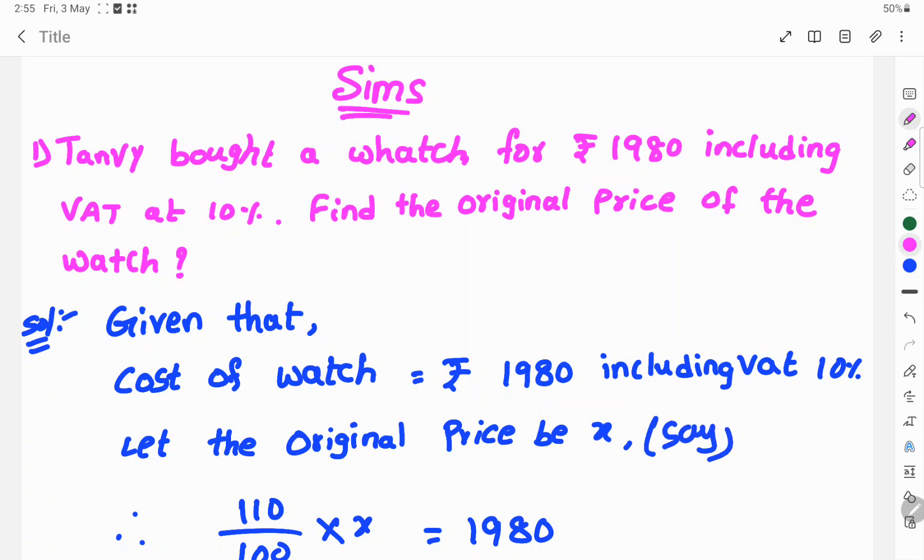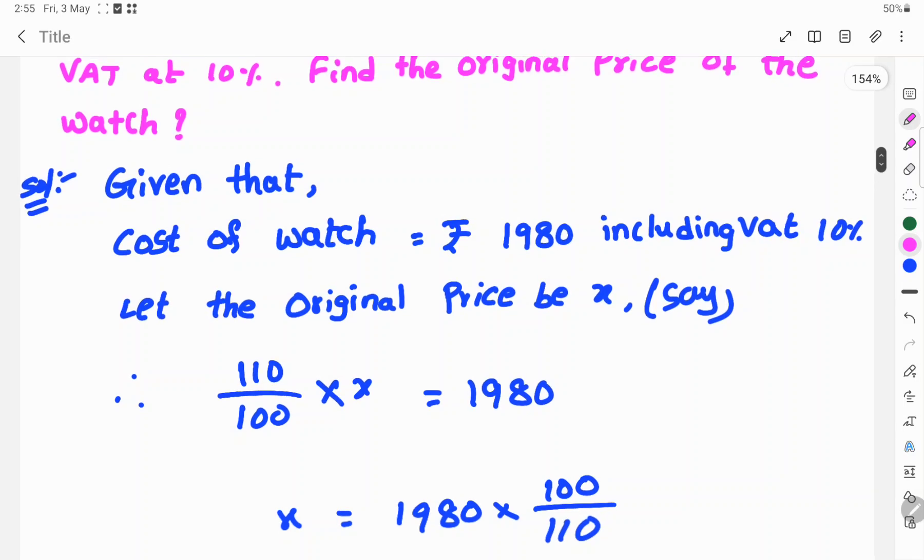Therefore, 10% is VAT. So 100 plus 10, 110 by 100 times X equals Rs. 1980.